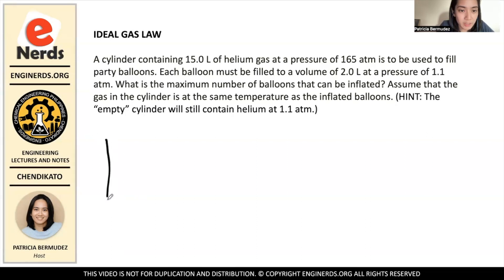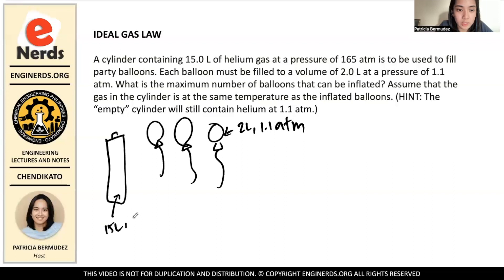For example, you have a tank here. And then, you're gonna make balloons. And this one is 2 liters each at 1.1 atm. And this one has a volume of 15 liters and it has a pressure of 165 atm. But there's a hint that the empty cylinder will still contain helium at 1.1. So, you have to deduct this value to get the pressure of helium itself without the container.